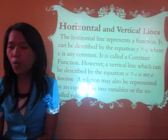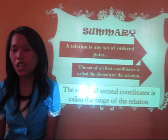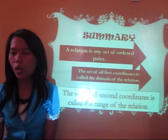In summary, a relation is any set of ordered pairs. The set of all first coordinates is called the domain of the relation, and the set of all second coordinates is called the range of the relation.